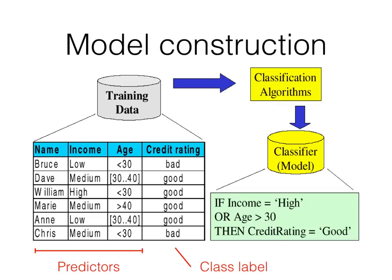Here's the first phase: model construction using a credit rating problem. We have training data with six people — their name, income, age range, and the target credit rating (good or bad). We run the training data through our classification algorithm and it builds a classifier — in this case, a rule. The rule is: if the income is high or the age is more than 30, then the credit rating is good.